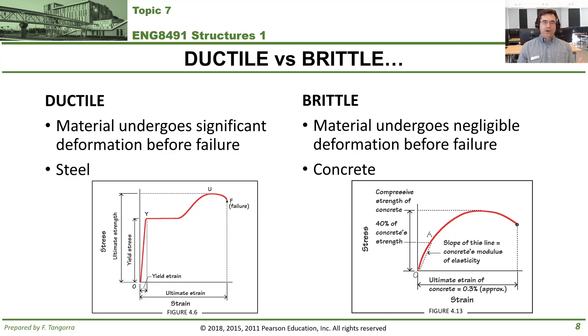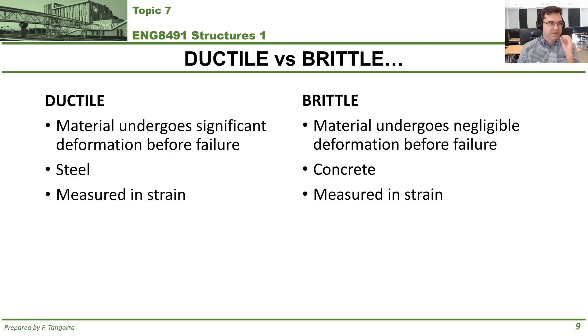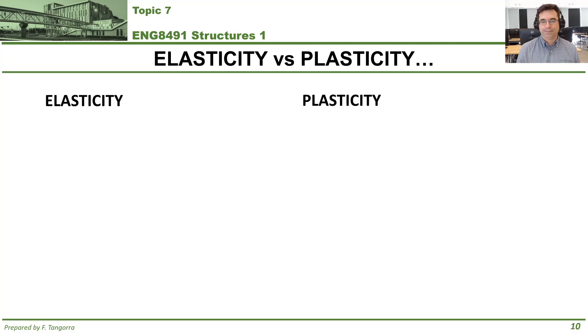Now, how do we tell the difference between ductile and brittle material? We're using qualitative words like significant deformation or negligible deformation. This is an engineering topic. We need to be more specific. Ductility and brittleness of a material are actually measured in strains. Ductile material has a strain, an ultimate strain, that's more than five percent. Brittle material has an ultimate strain that's less than five percent. So that's how you can tell the difference whether or not your material is ductile or brittle.